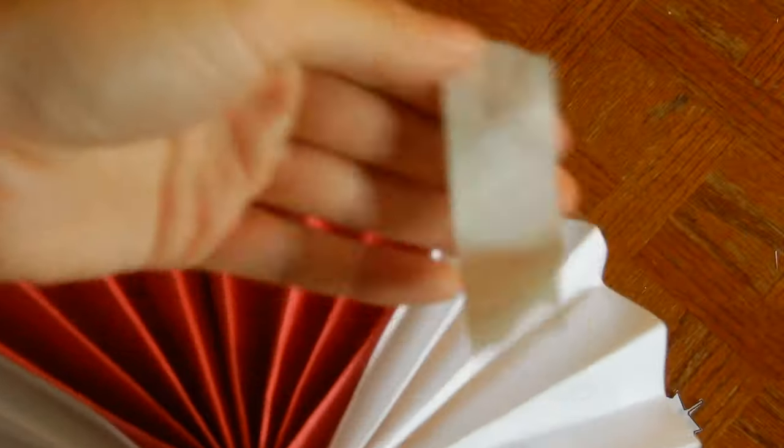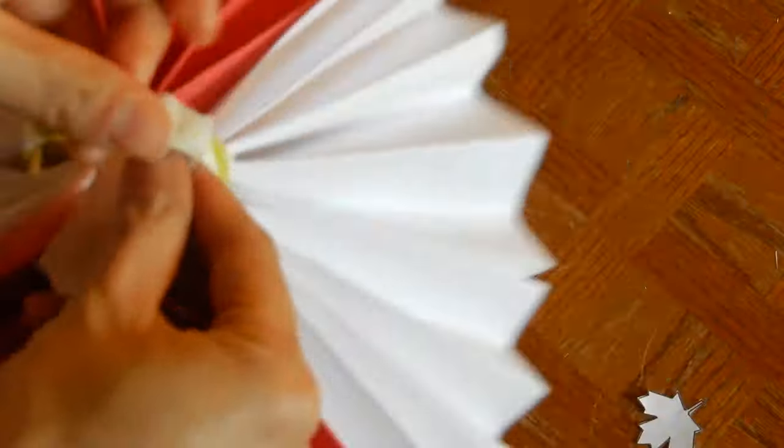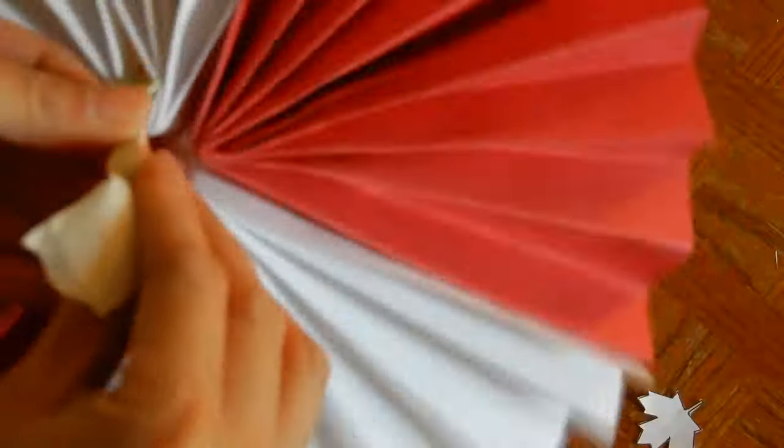And then I'm going to fold the one end and stick it into the other end. And then to ensure that stays, I'm going to tape it up. And then I'm going to move that tape section to the front and it will be covered by the maple leaf.